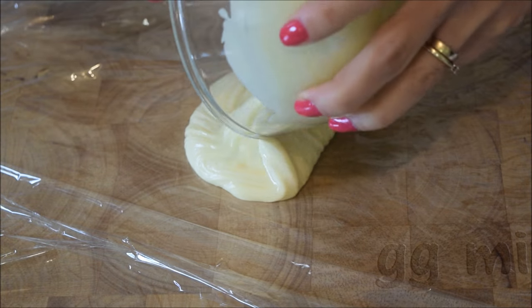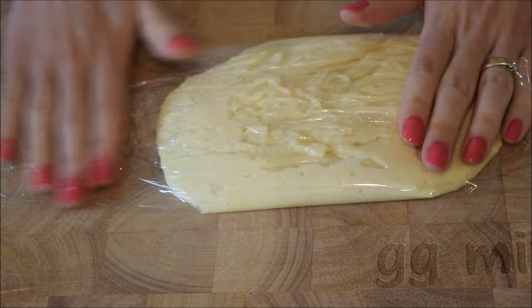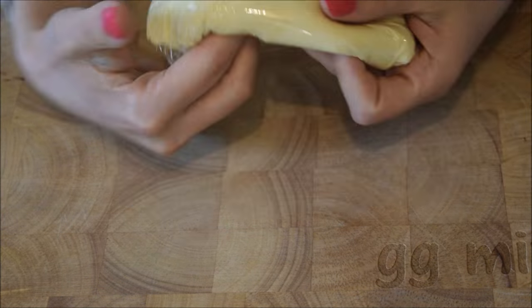Then lay a large bit of cling film on your work surface and pour your chocolate on top and seal well. Then leave to harden and set overnight.